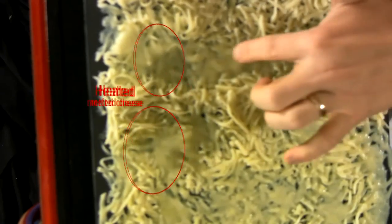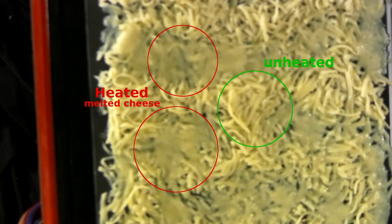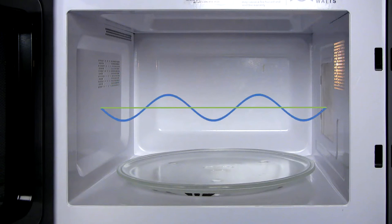Now, you can see on here sections where the cheese is completely melted and other sections where it's completely unheated. The oven's metal walls only reflect waves of a length that fits inside the oven. This standing wave causes hot and cold spots inside the oven.